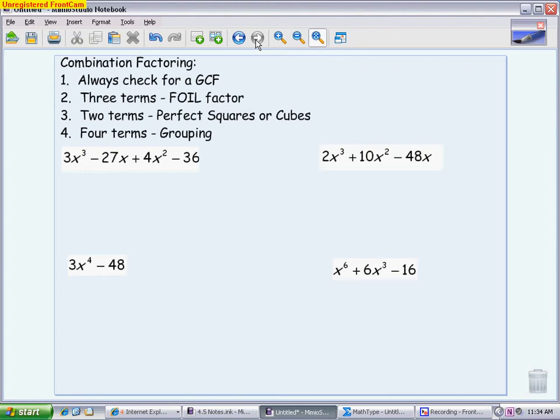Second, and third, and fourth, they all kind of go together. It's just saying, looking at the terms, it'll give you an idea of what factoring you want to try. If it's three terms, a trinomial, you want to try to FOIL factor it. If it's two terms, you want to look and see if it's a perfect square or a perfect cube. If it's four terms, you want to try grouping like we just did.